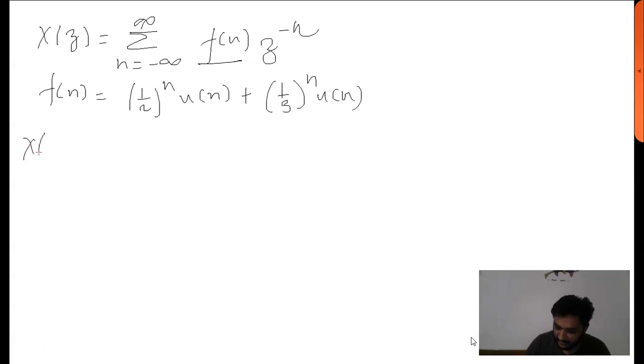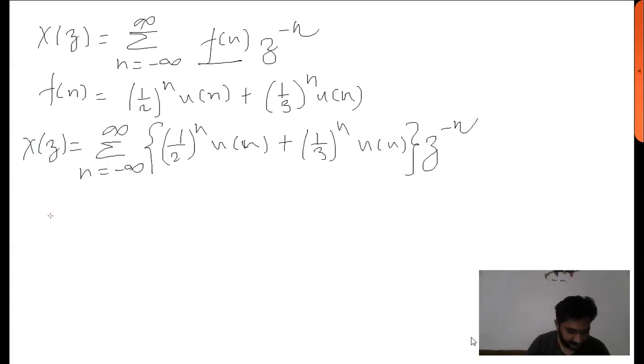Let us solve this. We know that X(Z) equals the summation from n equals minus infinity to infinity of f(n) times Z to the power minus n. Given this f(n), X(Z) will become, by applying...